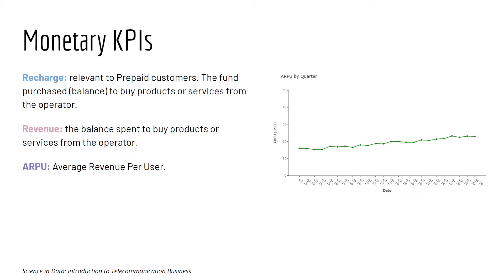Next we have Monetary KPI. Recharge is relevant in the prepaid market — it's the fund purchased to buy products or services from the operator, like a digital wallet. Keep in mind that recharge is not yet revenue, because in telco, revenue is recognized only when customers use the balance to buy a service. ARPU, or Average Revenue Per User, is one of the most prominent KPIs in the telco industry. It means how much a customer is spending on average, and ideally you want ARPU to be high.